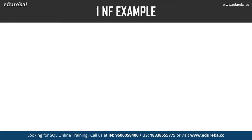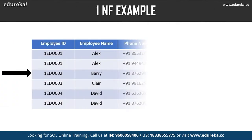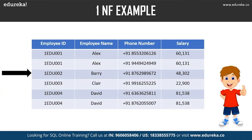Looking at the employee table, we have employee ID, employee name, phone number, and salary as columns. We can clearly see that the phone number column has two values, thus it violates the first normal form. After applying first normal form, each and every row is distinct — no cell has multiple values. The table has achieved atomicity.